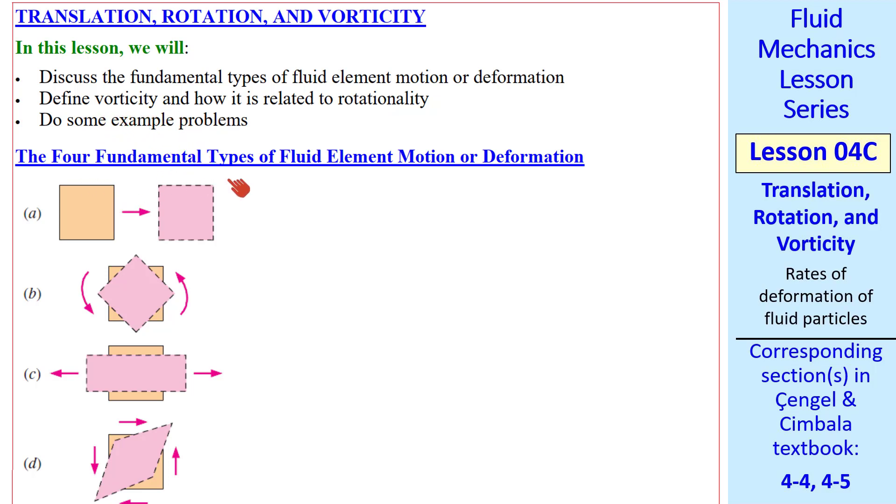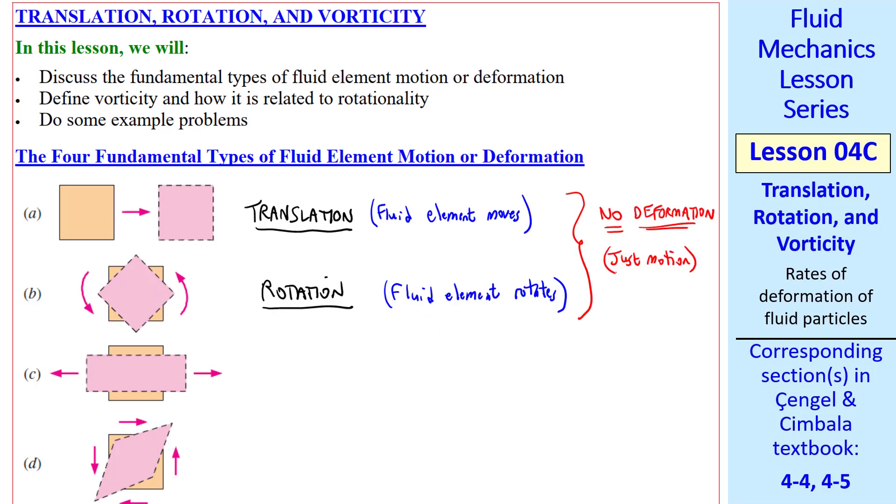There are four fundamental types of fluid element motion or deformation. The first one is translation. The fluid element simply moves from one place to another. The second one is rotation, where the fluid element simply rotates. For these first two, there is no deformation, just motion.